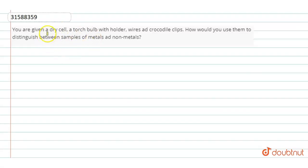So guys, now the question is: you are given a dry cell, a torch bulb, a holder, wires and crocodile clips. How would you use them to distinguish between samples of metals and non-metals? We will use them to distinguish between samples of non-metals and metals.